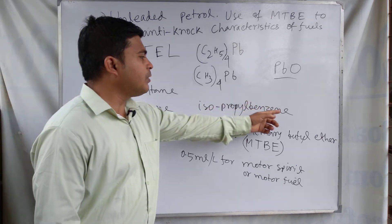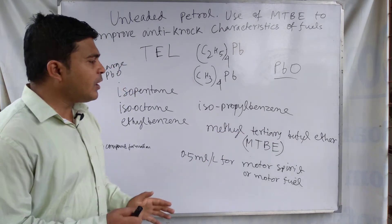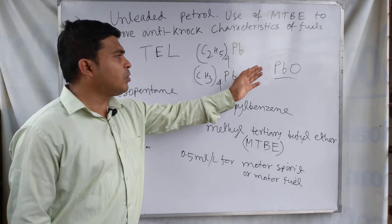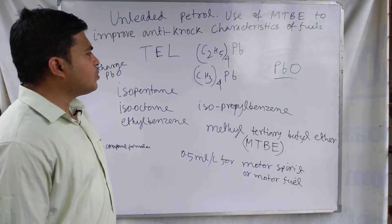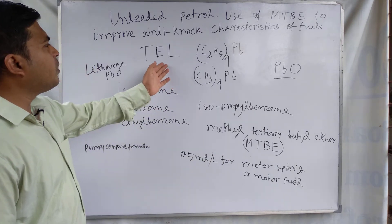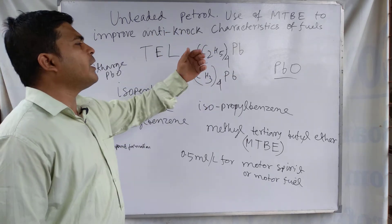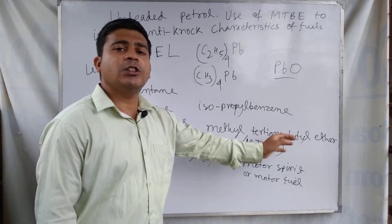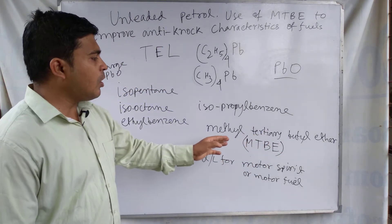These alternative substances — isopentane, isooctane, ethyl benzene, isopropyl benzene, methyl tertiary butyl ether — can be used in the place of tetraethyl lead, because tetraethyl lead causes problems in the cylinder and piston due to lead oxide formation. This is what defines unleaded petrol, and among these alternatives, MTBE is preferred because it contains an ether group.